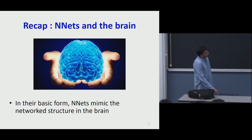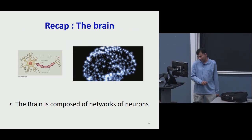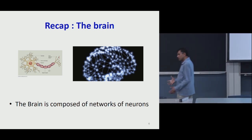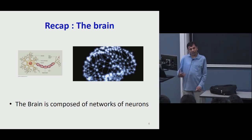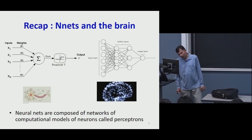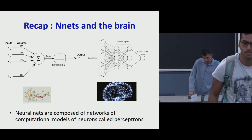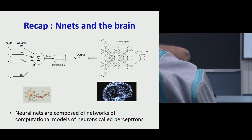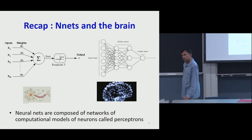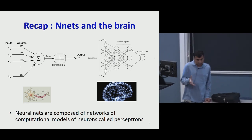In their basic form, neural networks try to mimic the network structure of the brain with lots of elements connected to one another. The brain is composed of a network of neurons where individual neurons have lots of incoming connections; when the aggregate incoming signal exceeds a threshold, these neurons fire and activate downstream neurons. In our computational model, we had a similar structure — a model for the neuron itself. The neuron was modeled by a perceptron, where you had a number of inputs each with a corresponding weight, so the neuron saw a weighted sum of all its inputs. When the weighted sum exceeded a threshold, the neuron fired.